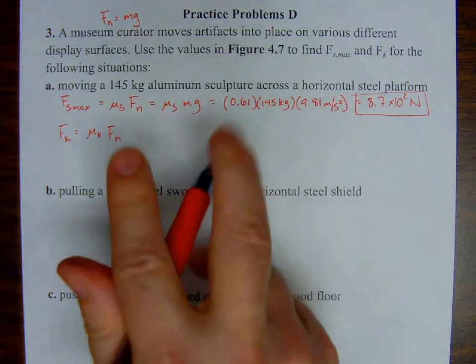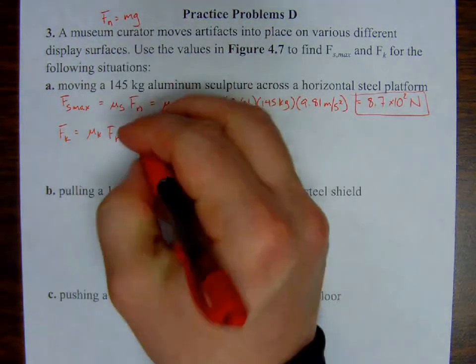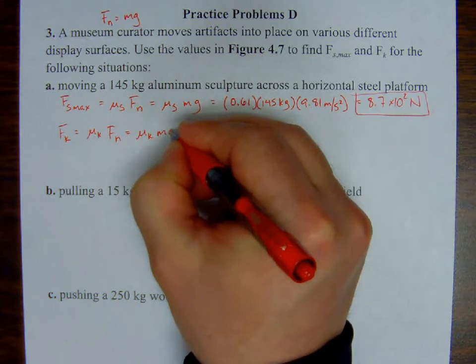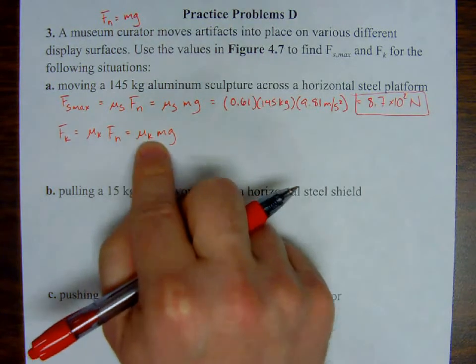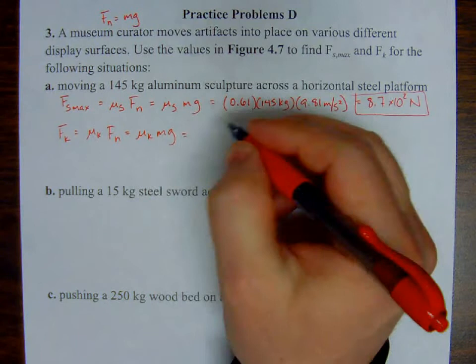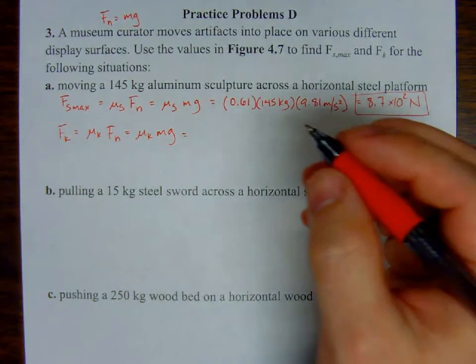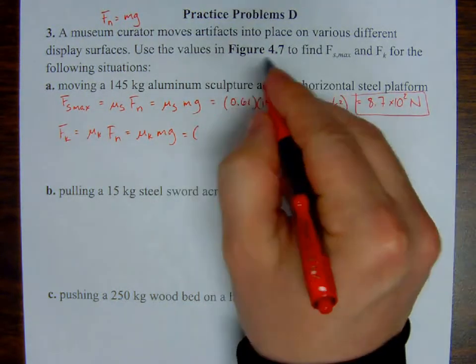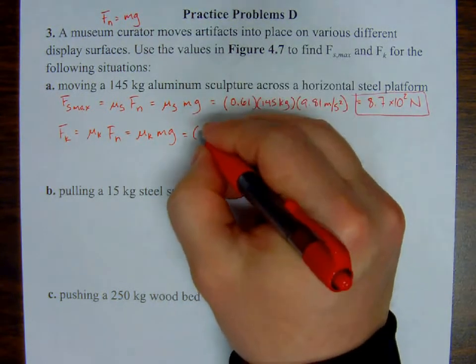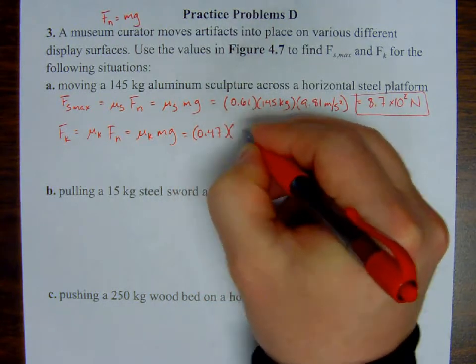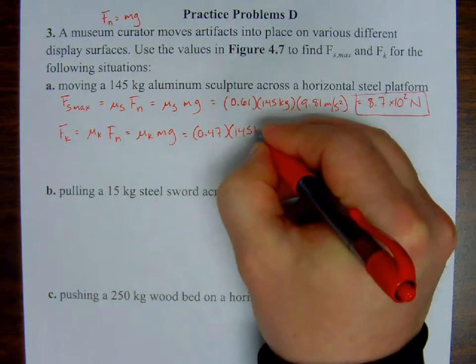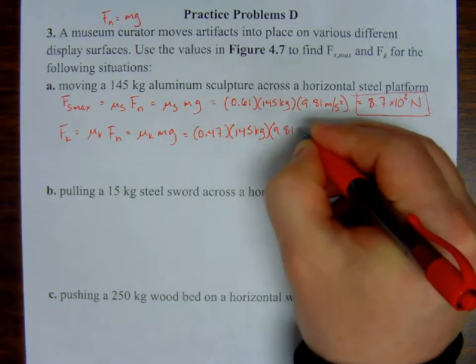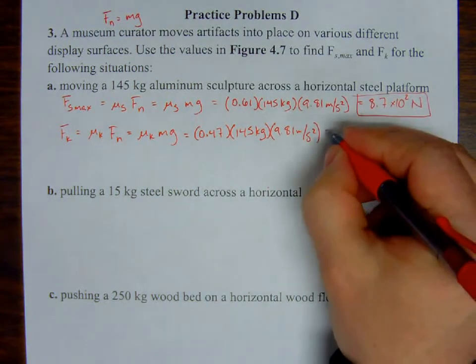But again, positive because it's in the opposite direction. So, looking at figure 4.7, coefficient of kinetic friction is 0.47, again, the mass is 145 kilograms, acceleration due to gravity, positive is 9.81 meters per second squared, again, two sig figs, that tells me that I should report, one calculator, what'd you tell me, 6.7 times ten to the second newtons. Okay, let's go ahead and move on to the next one, so we can get through these in a timely manner.